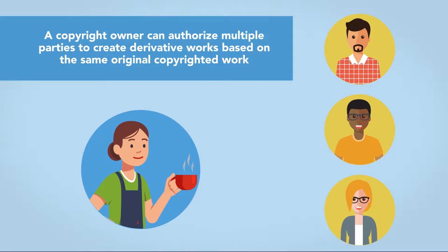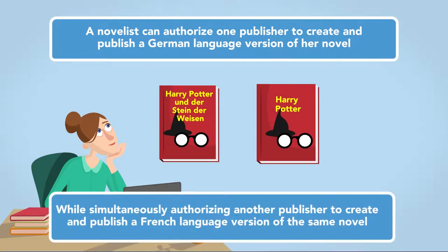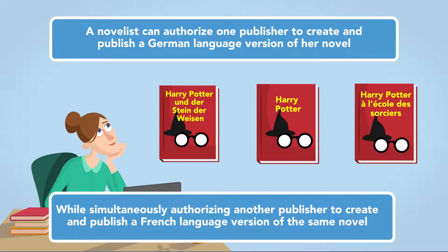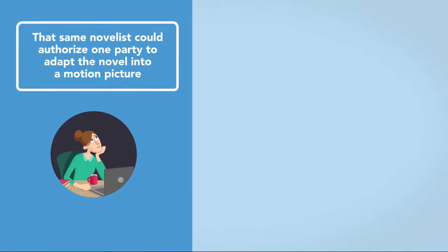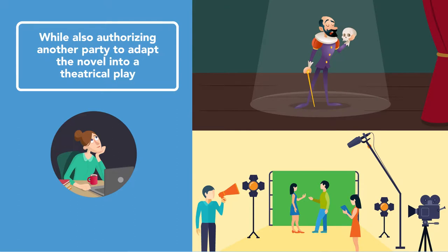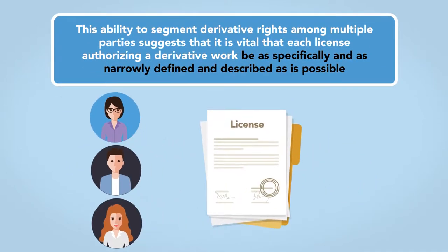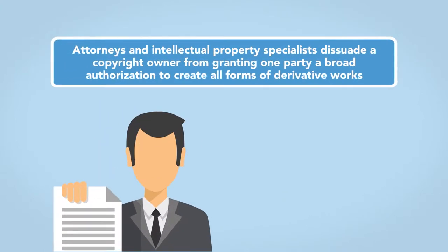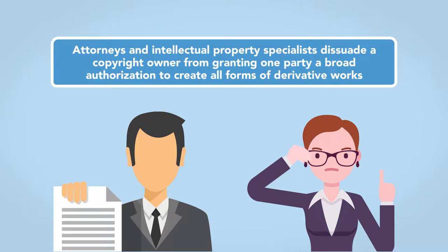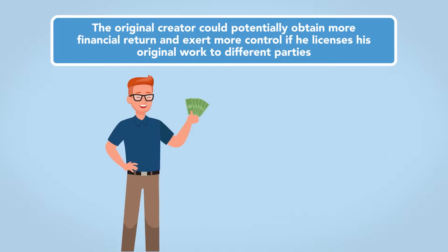A copyright owner can authorize multiple parties to create derivative works based on the same original copyrighted work. For example, a novelist can authorize one publisher to create and publish a German-language version of her novel, while simultaneously authorizing another publisher to create and publish a French-language version of the same novel. That same novelist could authorize one party to adapt the novel into a motion picture, while also authorizing another party to adapt the novel into a theatrical play. This ability to segment derivative rights among multiple parties suggests that it is vital that each license authorizing a derivative work be as specifically and as narrowly defined and described as possible. Attorneys and intellectual property specialists typically dissuade a copyright owner from granting one party a broad authorization to create all forms of derivative works, because the original creator could potentially obtain more financial return and exert more control by licensing his original work to different parties.